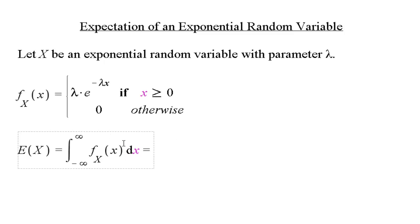Now, our PDF is zero for negative numbers, so that's going to be the integral from zero to infinity. It's going to be this lambda times e to the minus lambda, since now x is at least zero for this integral. And then we also need an x out here.